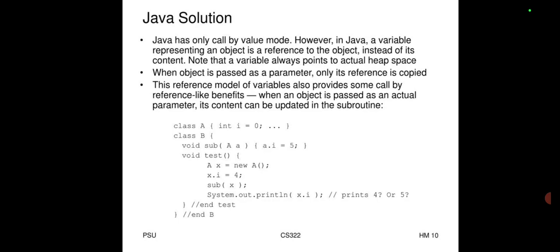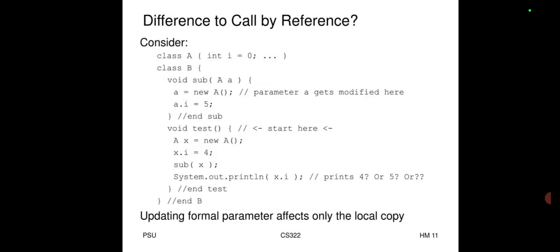Java solution: Java has only one call-by-value mode. However, in Java, a variable representing an object is a reference to the object rather than its content. The variable always points to actual heap space. When an object is passed as a parameter, only its reference is copied. This reference model provides some call-by-reference-like benefits — when an object is passed, its content can be updated within the subroutine. Example: class A { int i = 0; } — class B void sub(A a) { a = new A(); a.i = 5; } void test() { A x = new A(); sub(x); }